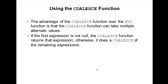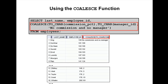For example: SELECT last_name, COALESCE(commission_percentage, manager_id, 'No commission', 'No manager') FROM employees. If the commission percentage expression is null, it returns the next one; if that is also null, it returns the next — that is how it works.